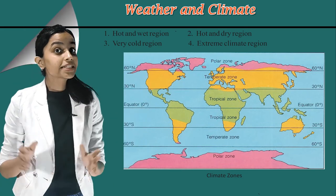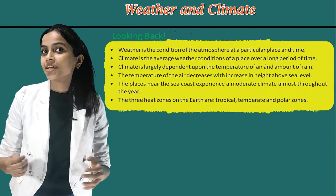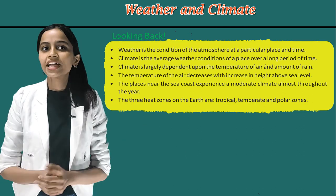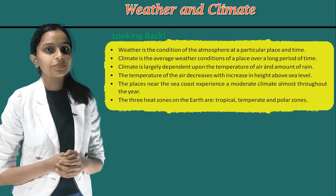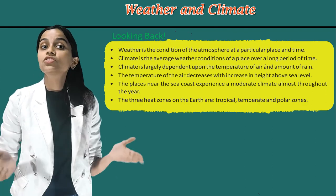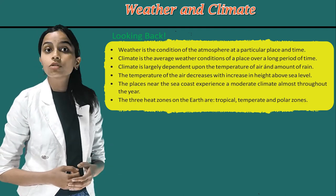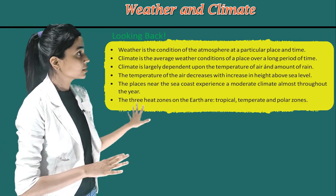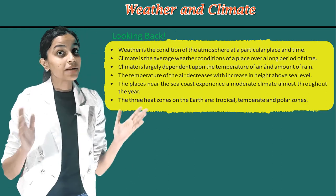Now, children, it's time for looking back. Weather is the condition of the atmosphere at a particular place and time. Climate is the average weather conditions of a place over a long period of time. Climate is largely dependent upon the temperature of air and amount of rain. The temperature of the air decreases with increase in height above sea level. The places near the sea coast experience a moderate climate almost throughout the year. The three heat zones on the earth are tropical, temperate, and polar zones. So, children, it's time to take your leave.